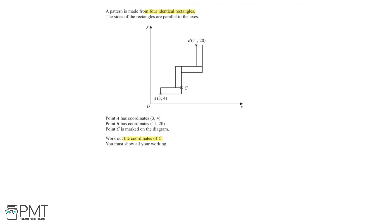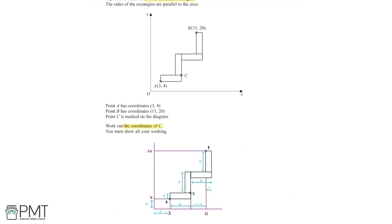Let's look at this diagram to make it a little bit clearer. This new diagram is identical to the original, but we've labelled in some measurements. We've assumed that the horizontal side has a length of x and the vertical side has a length of y, and since all four rectangles are identical, we can use this for each of the rectangles.